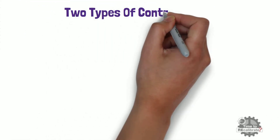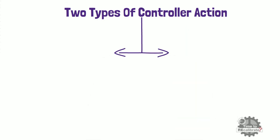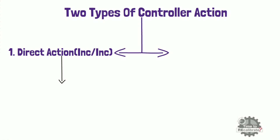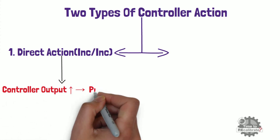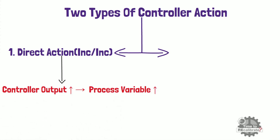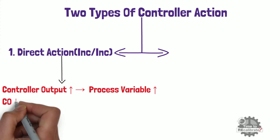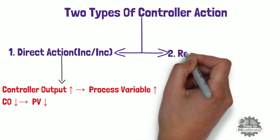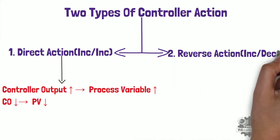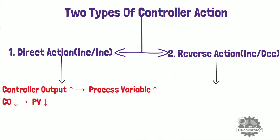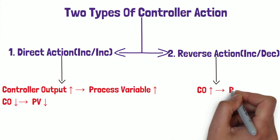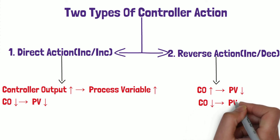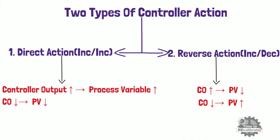There are mainly two types of controller action. The first type is direct action. In direct action, either the controller output increases when the process variable increases above set point, or the controller output decreases when the process variable decreases below set point. The second type is reverse action. In reverse action, either the controller output increases when the process variable decreases below set point, or the controller output decreases when the process variable increases above set point.